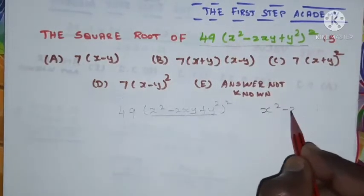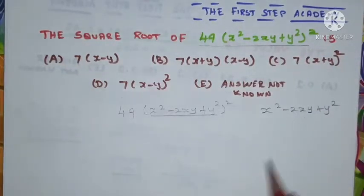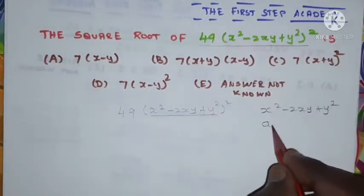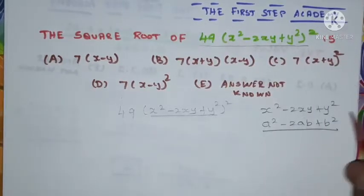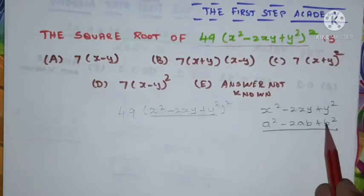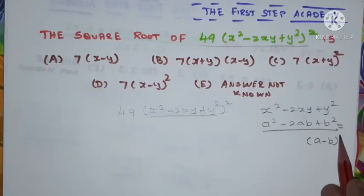It is x squared minus 2xy plus y squared. It exactly resembles a squared minus 2ab plus b squared. If it is a squared minus 2ab plus b squared, then that can be written as (a minus b) whole squared.